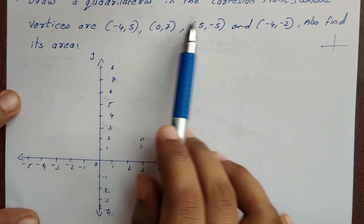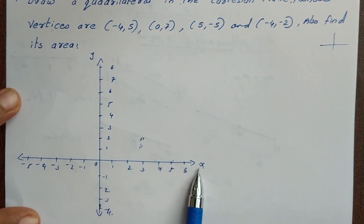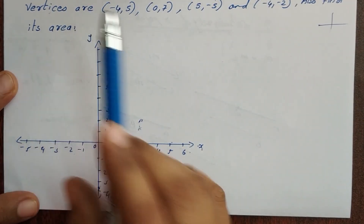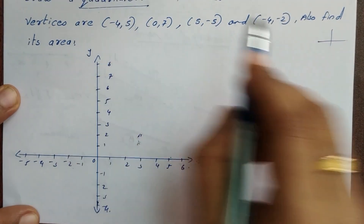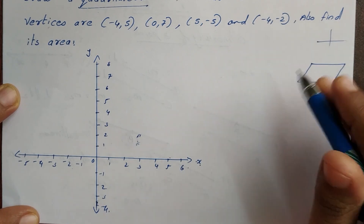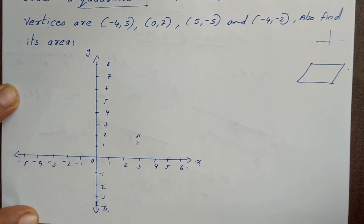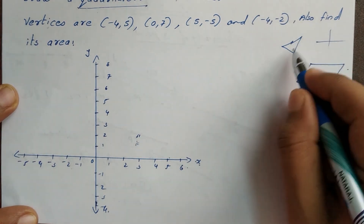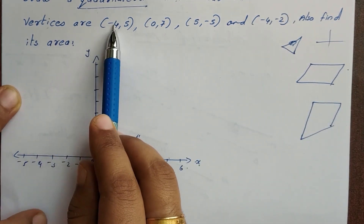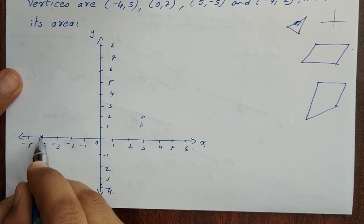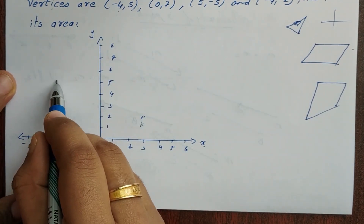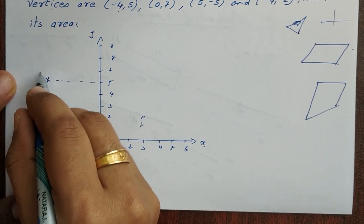Draw a quadrilateral in the Cartesian plane. Mark the x and y axes. Then you will mark the points here. Now these are the vertices. This vertex is minus four, five. Minus four is on the x-axis, so this point is minus four, five.